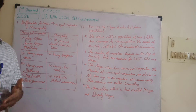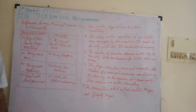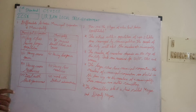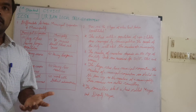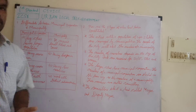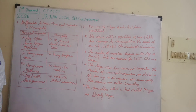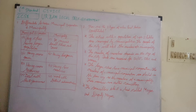The first question: differentiate between municipal corporation and municipality. Municipal corporation deals with big cities — that is, cities which have a large number of population. Where more number of people are situated, that city is said to be a municipal corporation. Municipality means it consists of small cities and towns, not villages.